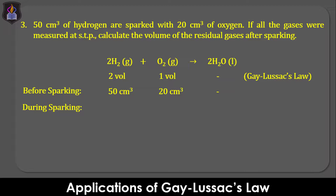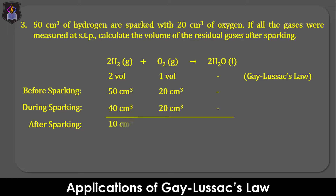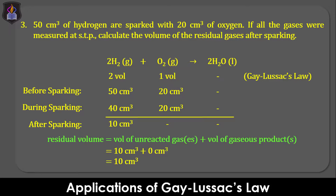The 50 cm³ of hydrogen would require 25 cm³ of oxygen to completely react. But since we do not have that volume of oxygen available, the available 20 cm³ of oxygen will completely react with only 40 cm³ of hydrogen to produce 0 cm³ of water, based on the ratio 2 to 1. This is because, according to Gay-Lussac, the product formed below 100 degrees Celsius is in liquid state and cannot form a ratio with the gaseous reactants. After sparking, 50 minus 40, that is 10 cm³ of hydrogen, will be left, and there will be no oxygen left. Therefore, the volume of the residual gases will only be 10 cm³ of unreacted hydrogen.